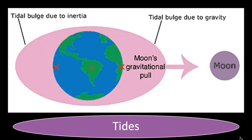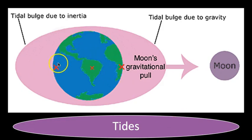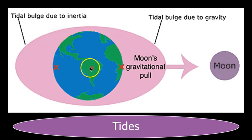At a half turn, or 12 hours later, Earth rotates through the other half of the bulge and we have a second high tide. Then low tide once again at three-quarters of a turn or rotation of the Earth, before finishing out one day.